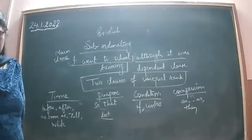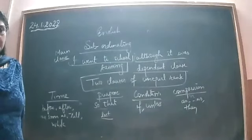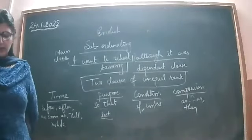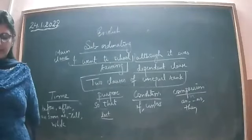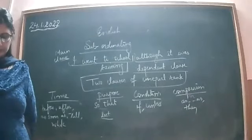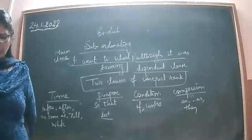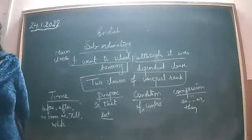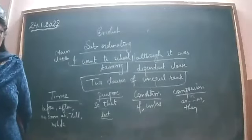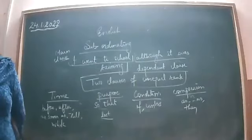Eighth: '__ there is a will, there is a way.' — Answer: 'where.' Ninth: 'My card has been __ stolen __ lost.' — Answer: 'either...or' or 'neither...nor.' Tenth: '__ I were a pilot, I would fly the skies.' — Answer: 'if.' Very good.